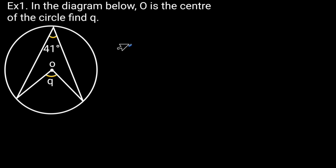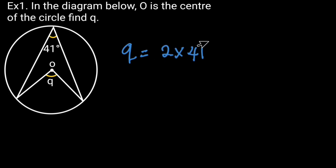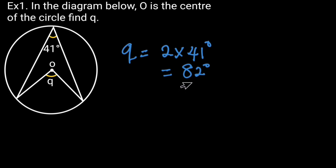Example 1: In the diagram below, O is the center of the circle. Find Q. Q is equal to 2 times 41 degrees, which is equal to 82 degrees. Reason: angle at the center is twice the angle at the circumference.